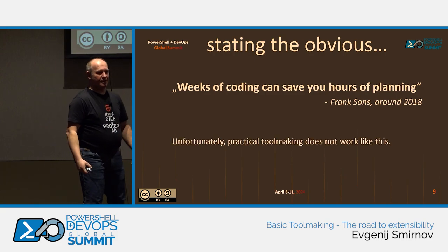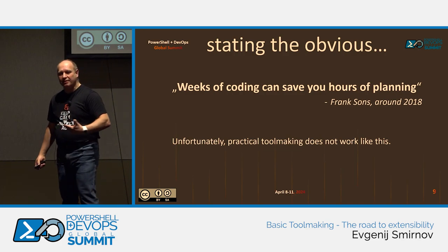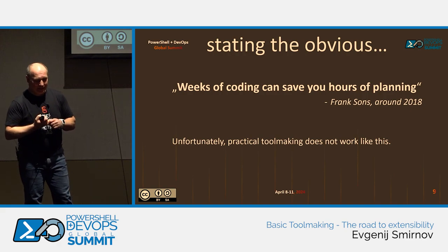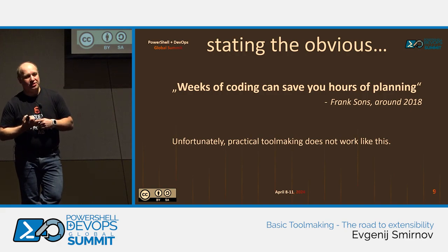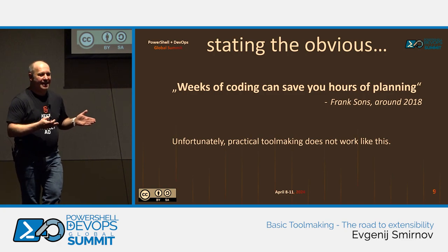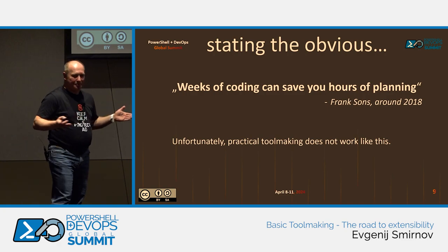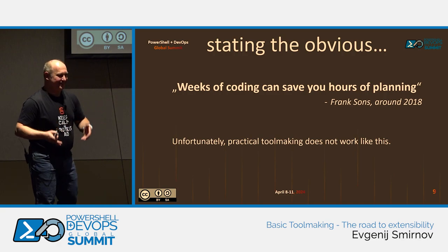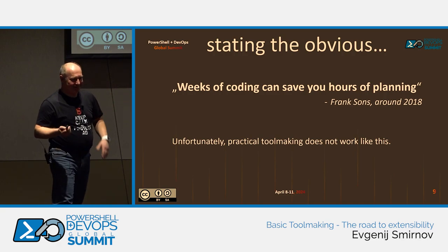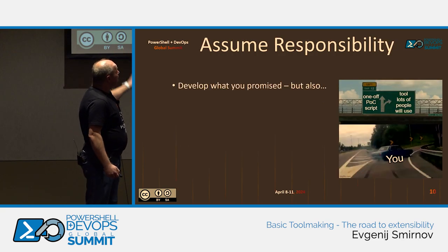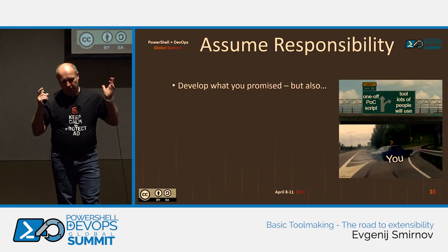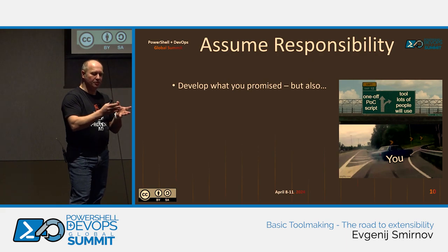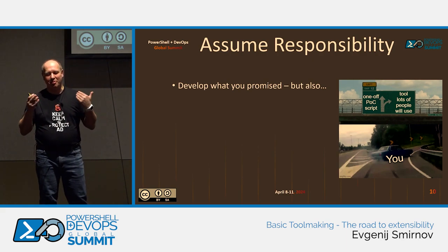Unfortunately that doesn't work that way in practical tool making. Because in practical tool making we are — I would like to call it loosely managed chaos. Other people call it agile, but it amounts to the same thing. Not what got us to Mars — the opposite of what got us to the moon. The first thing you need to be aware of when starting to put your tools into other people's hands: you are a maintainer now, whether you want or not.